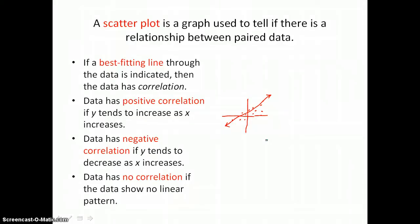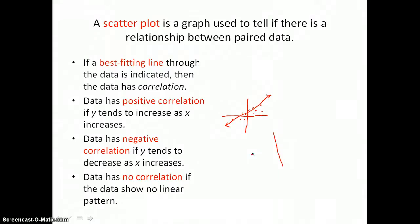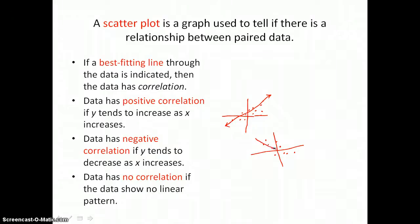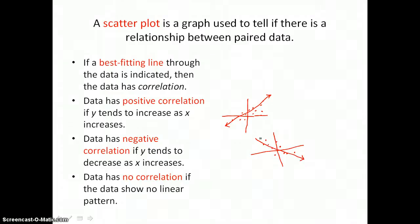Data has negative correlation if y tends to decrease as x increases. So a graph representing data with a negative correlation might look like this, where the best-fitting line slants downward from left to right.